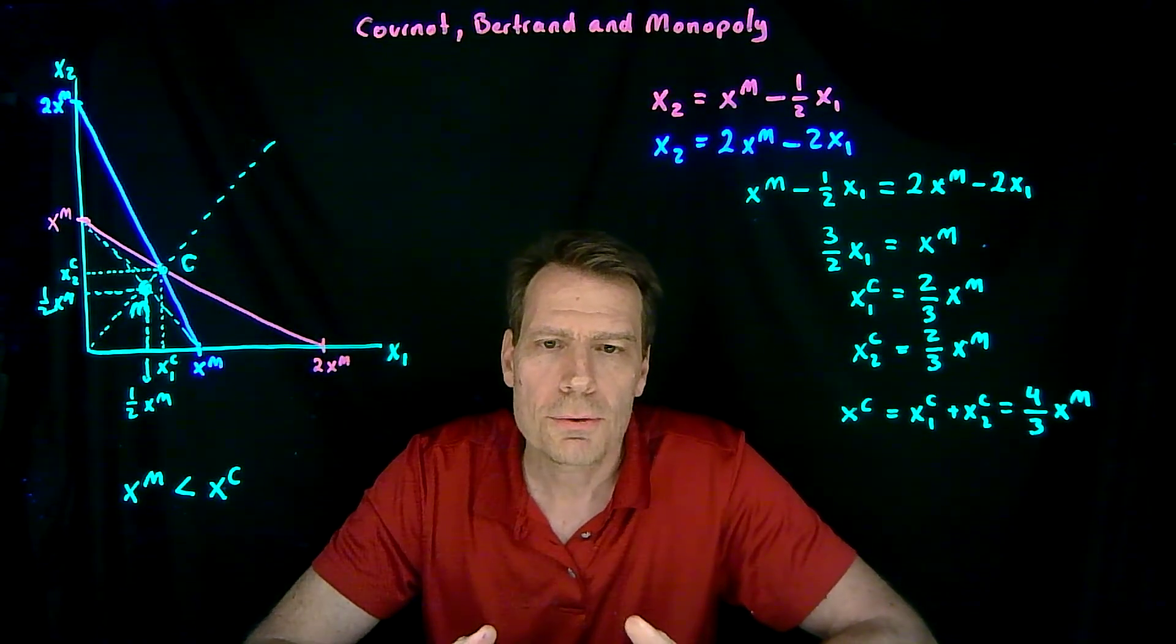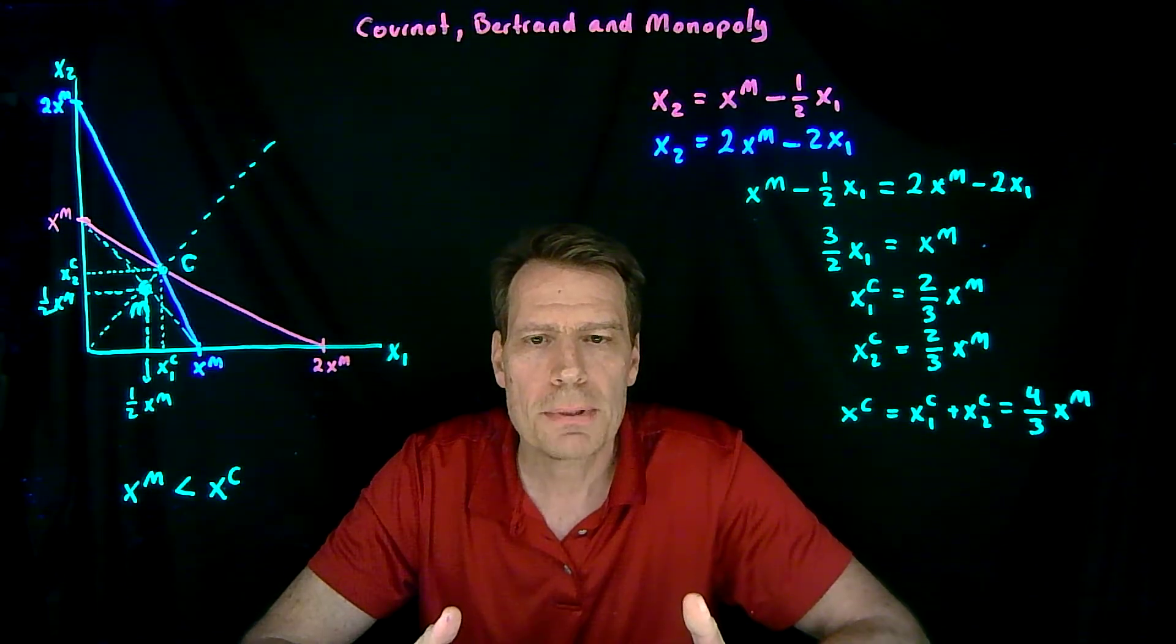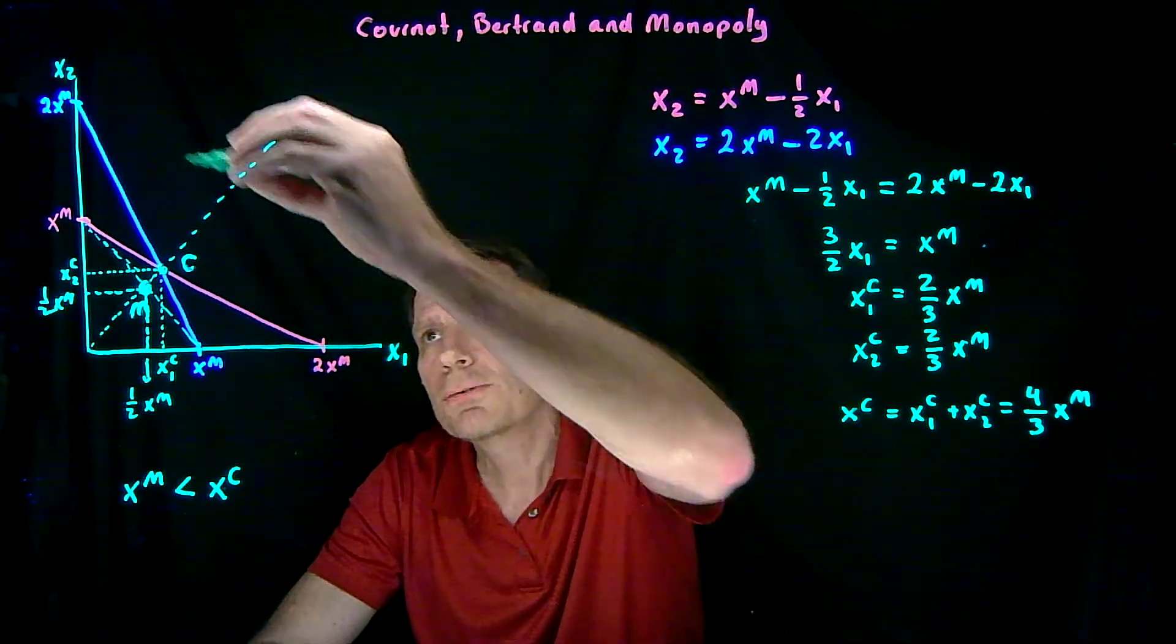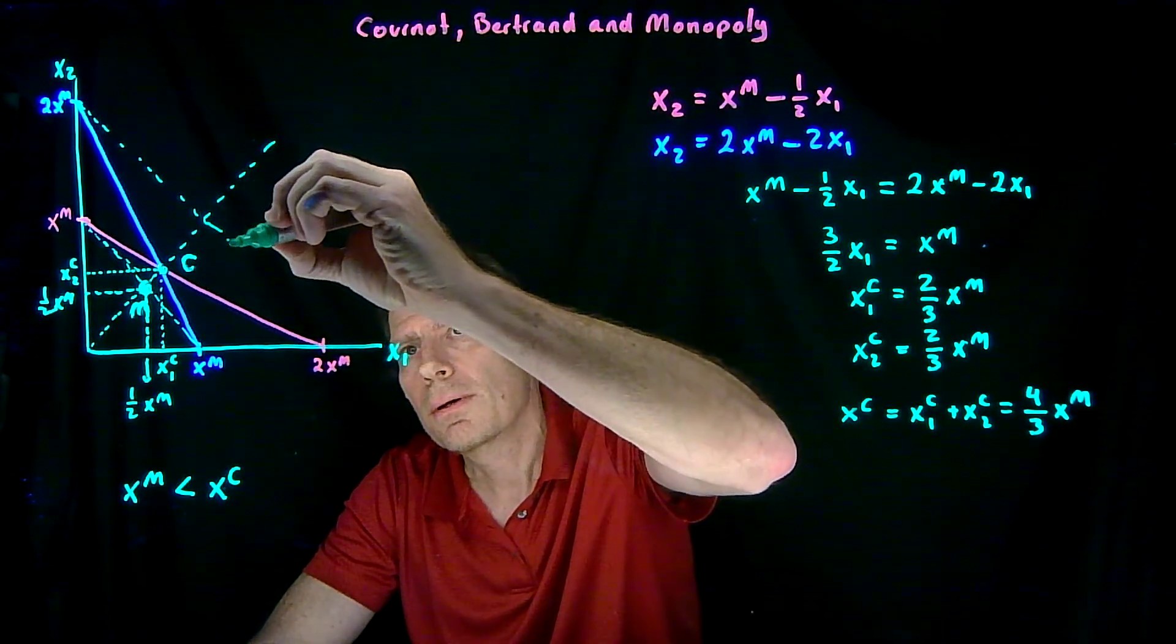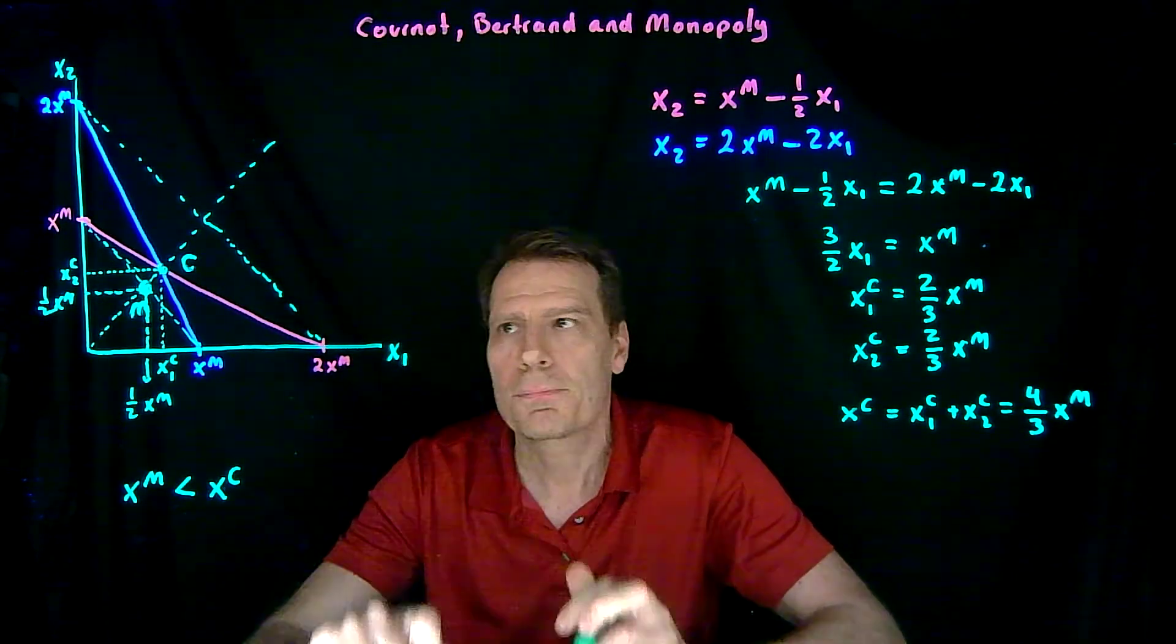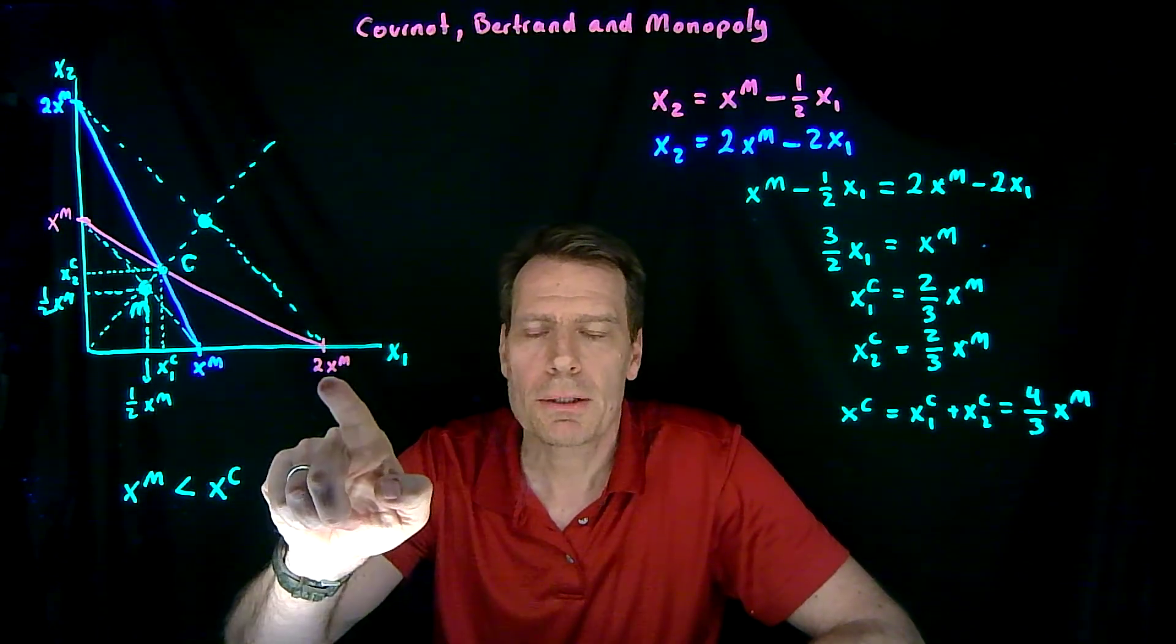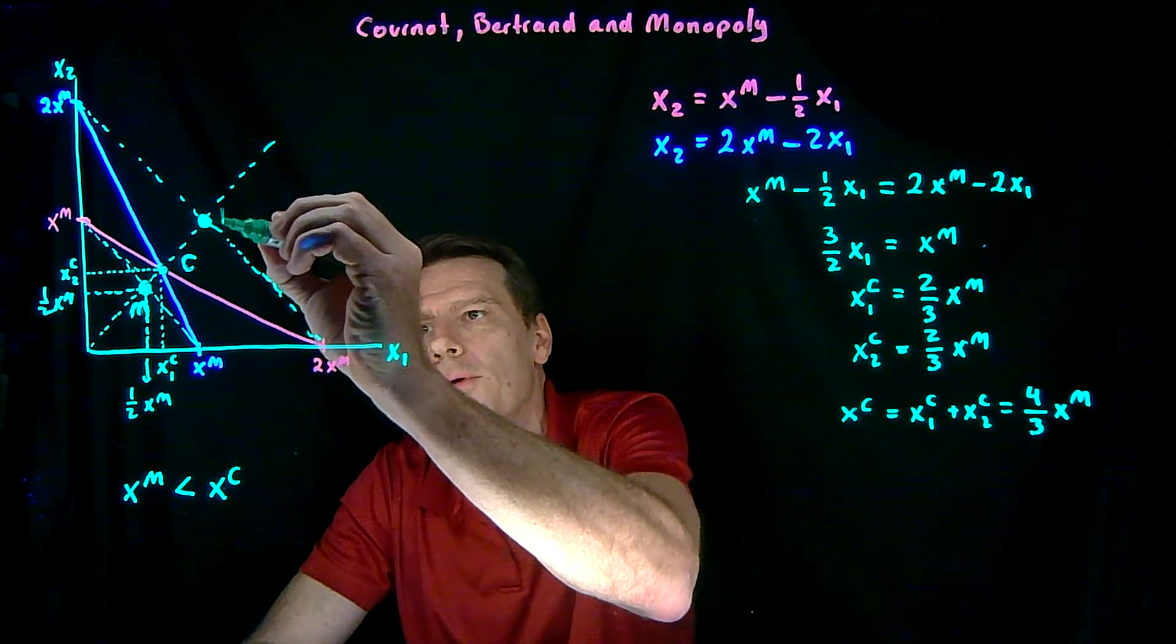We can also compare that to the Bertrand quantity. On Bertrand price competition, the two firms compete until price is equal to marginal cost. And that happens when together they produce twice the monopoly quantity. So if we draw another dotted line connecting these intercepts, we get a line where the sum of the two quantities is 2 times xm. If the two Bertrand competitors split the market by producing the monopoly quantity each, summing to 2 times the monopoly quantity, we would be at this point. So that would be Bertrand competition.